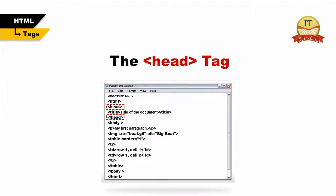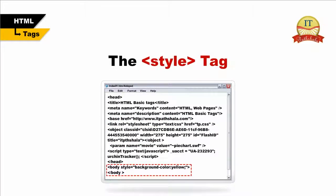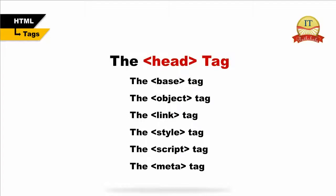The head tag. Head is just a container tag for all other header elements. It should be the first thing to appear after the opening HTML tag. Each head tag should contain a title tag indicating the title of the document. It may also contain any combination of the following elements in any order: the base tag, the object tag, the link tag, the style tag, the script tag, and the meta tag. We will be discussing these tags in detail later. The following is an example of the usage of a head tag.